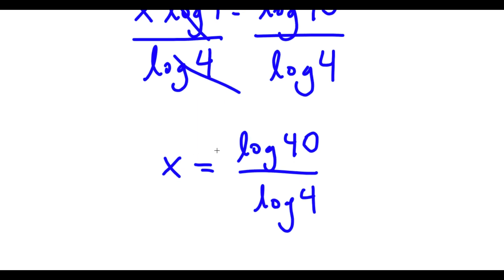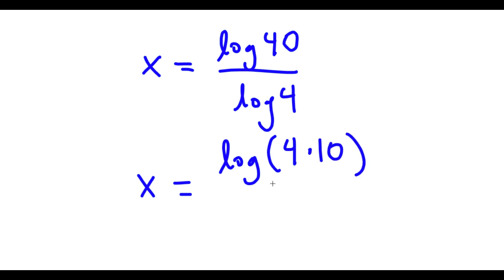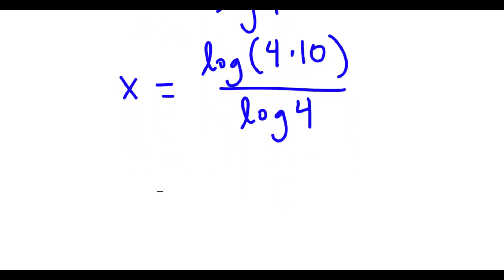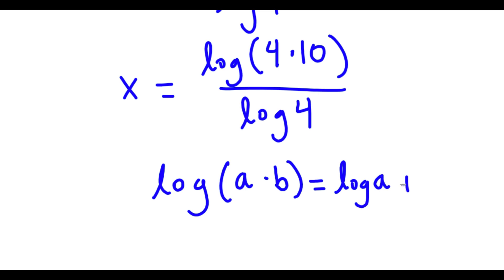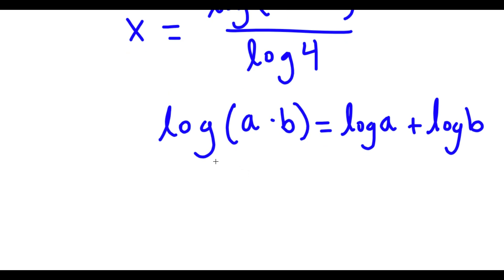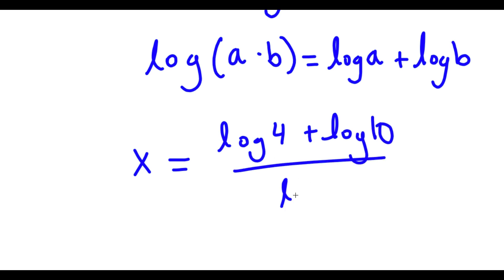Log 40 is the same as log of 4 times 10, so I have log of 4 times 10 over log 4. Using the log product rule, log of a times b equals log a plus log b. So log of 4 times 10 equals log 4 plus log 10, over log 4.